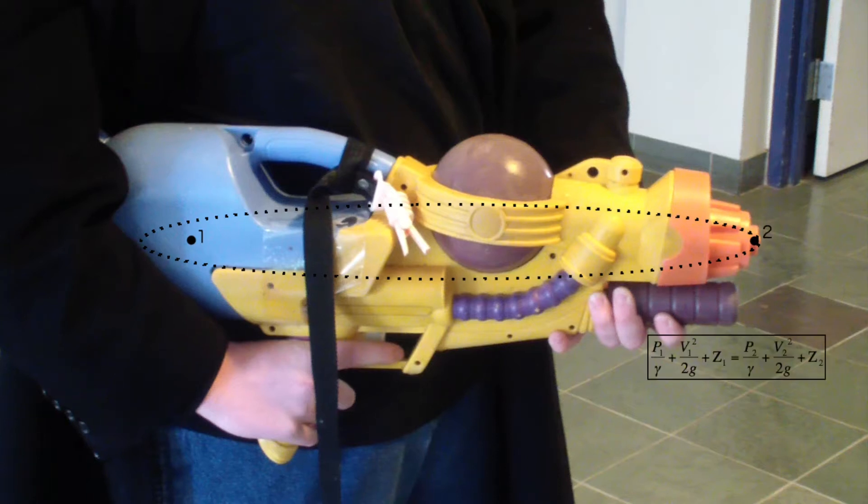As the tribute pumps the gun, P1 increases. We can assume that V1 is 0 in the tank, and we can eliminate Z1 and Z2 because the streamline is horizontal. This leaves us with two remaining terms.